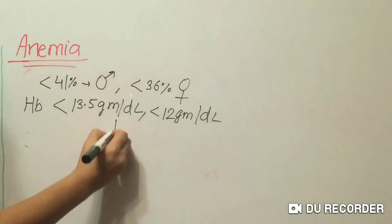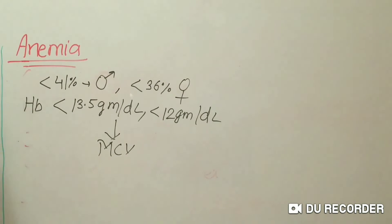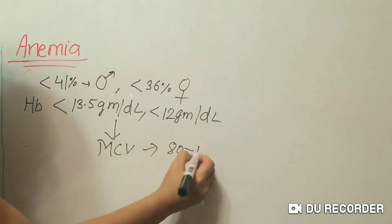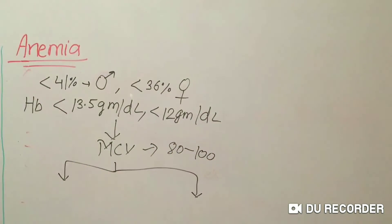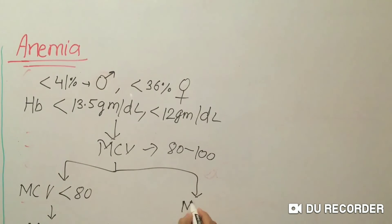For further investigation, we will check MCV — mean corpuscular volume, or mean cell volume. The normal value of MCV is 80 to 100. If MCV is less than 80, it means microcytic anemia. If MCV is more than 100, it means macrocytic anemia.